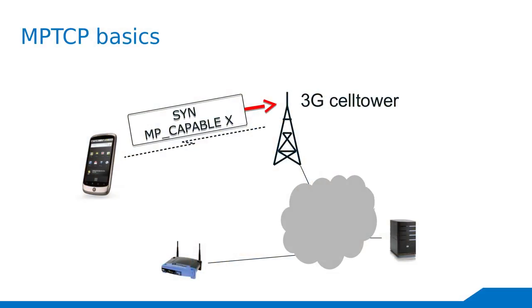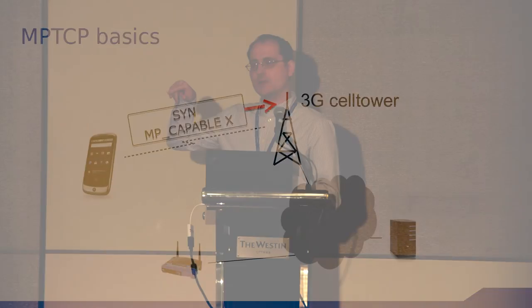Q: In the first slide you added a connection identifier option — the MP-capable exchange — what is that exactly? A: This is used to negotiate a shared secret between client and server using HMAC, and that secret is used when joining the connection so that the server knows the join request comes from the same client — it's cryptographic.